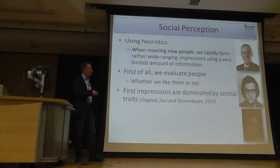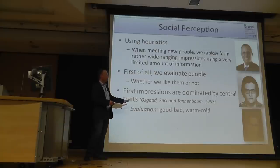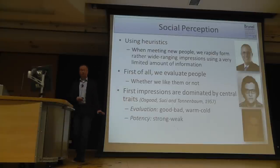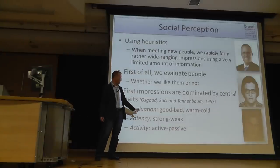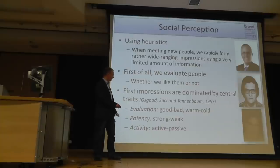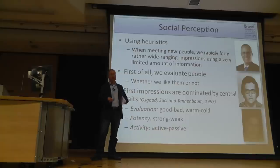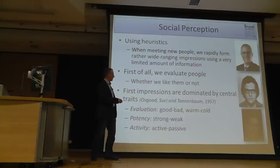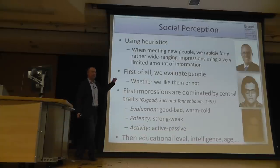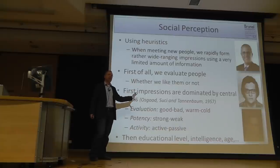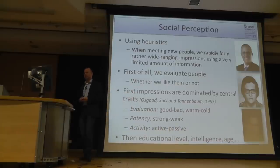This cognitive misers idea is comparable to Simon's bounded rationality in decision-making. One way to minimize cognitive load is to spontaneously categorize situations and people. When we meet a new person, we immediately make very wide-ranging impressions. It has been shown that a very first and basic judgment we make is whether we like them or not. Then we use more central traits like good or bad, warm or cold, potency — strong or weak — and activity — active or passive.